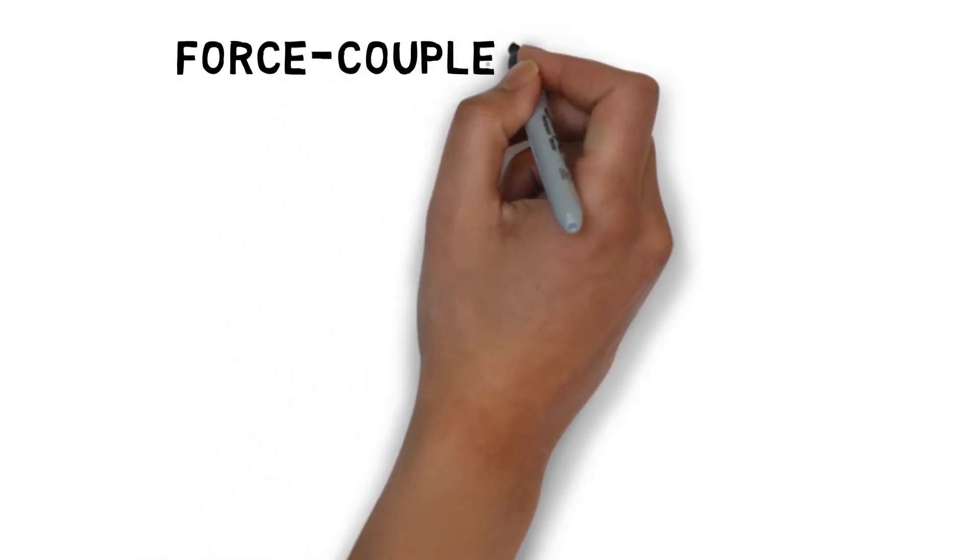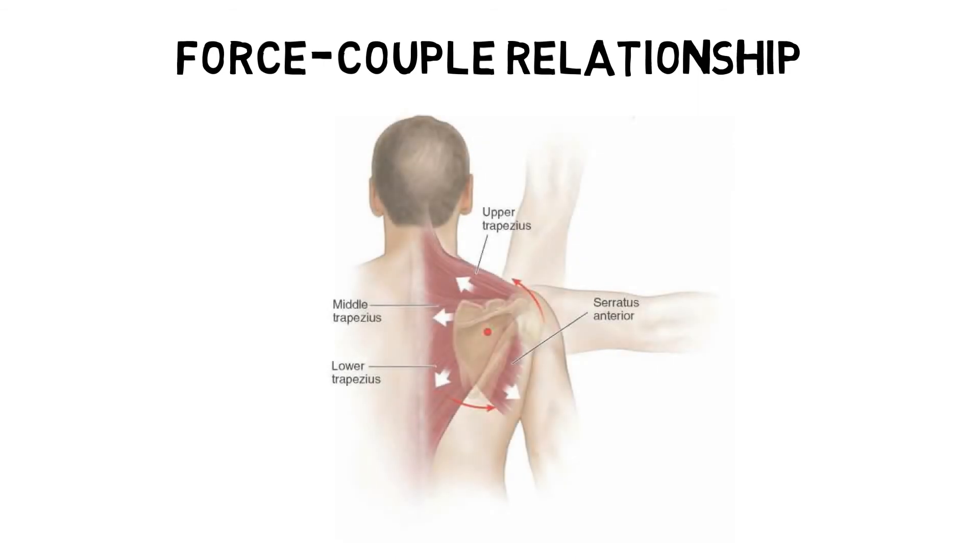Muscles do not work in isolation to produce movement. A force-couple relationship are groups of muscles that move together to produce movement around a joint. Each muscle in a force-couple has a different attachment site, pulls at different angles, and creates a different force on the joint, but all work together to produce movement.